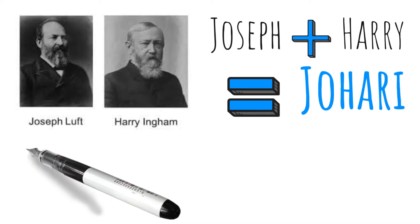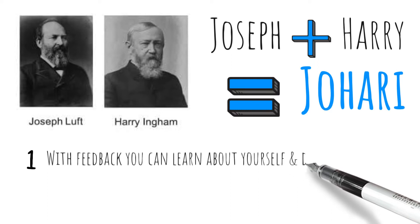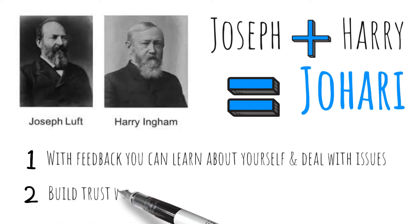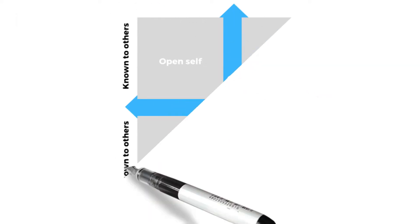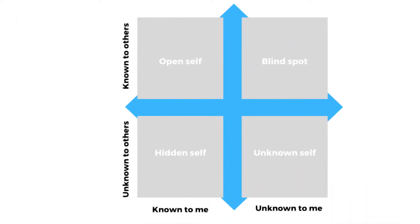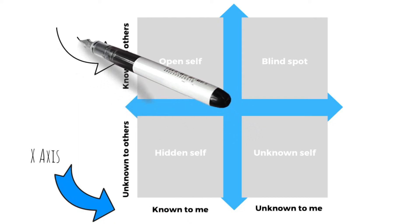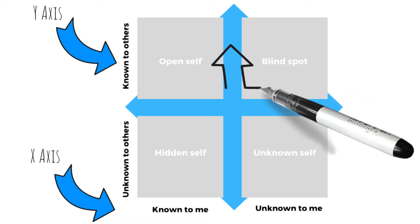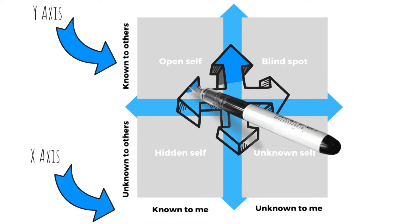There are two key ideas behind the tool. The first: with the help of feedback from other people you can learn about yourself and deal with personal issues. The second: you can build trust with others by disclosing information about yourself. The model also looks at two dimensions — aspects of your behaviour and style that are known or not known to yourself on the x-axis, and aspects known or not known to others on the y-axis.